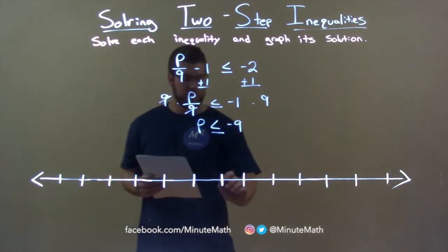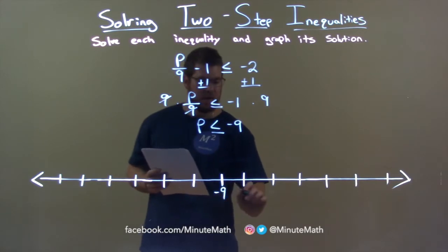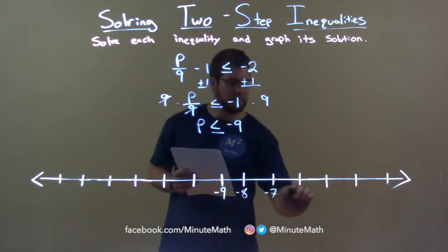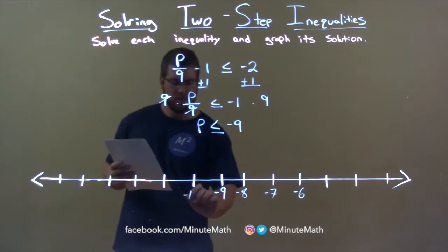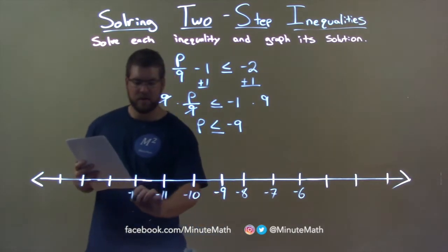So now let's graph this. We have negative 9 here, negative 8, negative 7, negative 6, and negative 10, negative 11, negative 12.